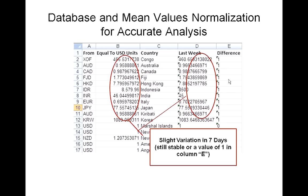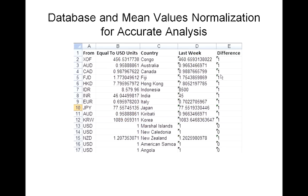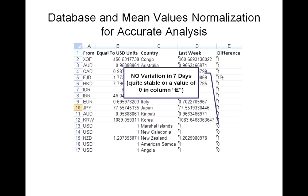Higher values approaching 3 will represent a bad economy due to some events — say, a political turbulence experienced by that country.